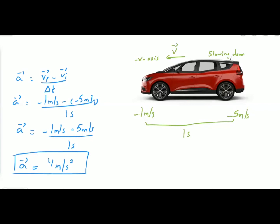We get positive acceleration. When the car is slowing down along the negative x-axis, the direction of acceleration is opposite to the direction of velocity. The acceleration is directed towards the positive x-axis, so we get positive acceleration in this case.